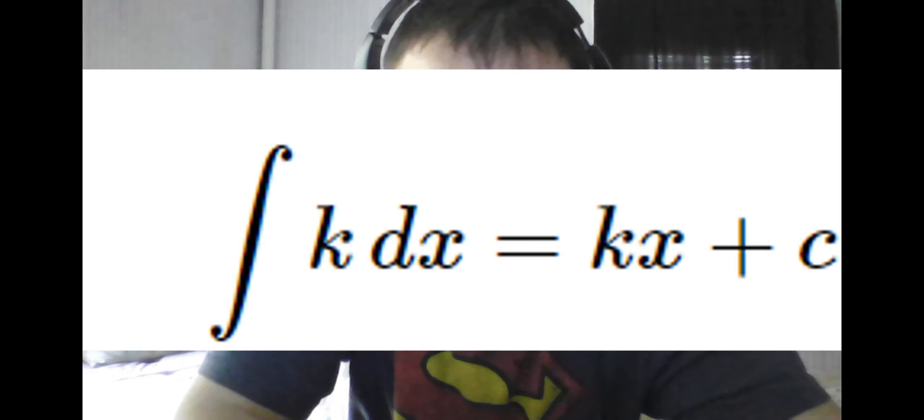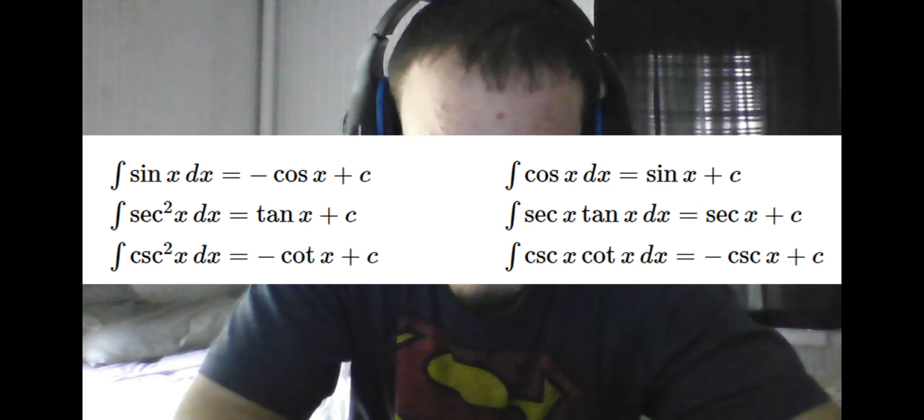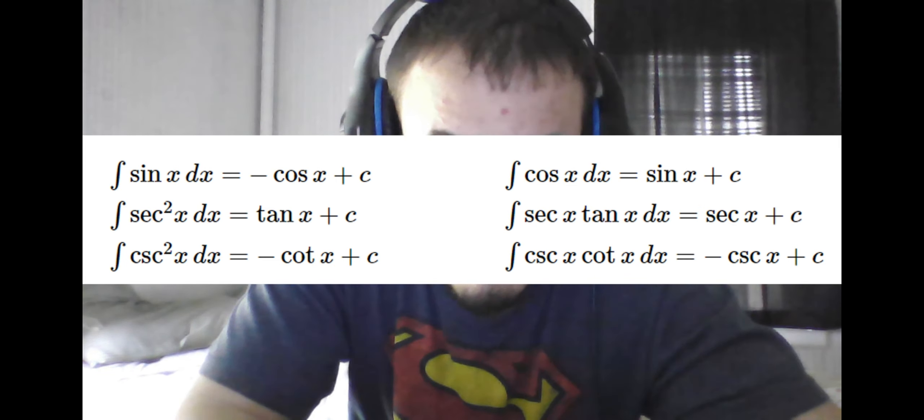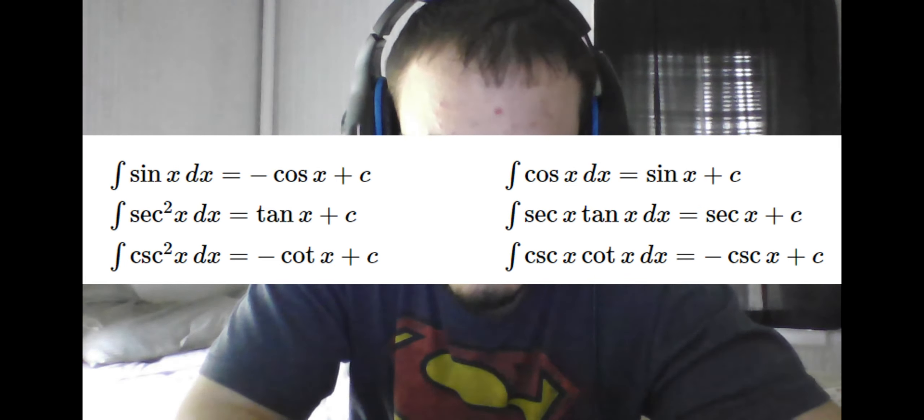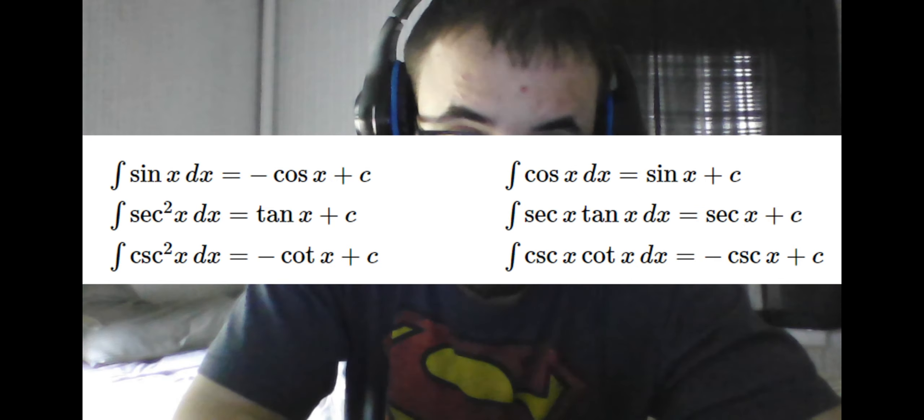We know we found explicitly the derivatives of different trig functions earlier, so we see the integral of sine is negative cosine, the integral of cosine is sine, the integral of secant squared is tangent, the integral of secant times tangent is secant, the integral of cosecant squared is negative cotangent, and lastly, the integral of cosecant times cotangent is negative cosecant.